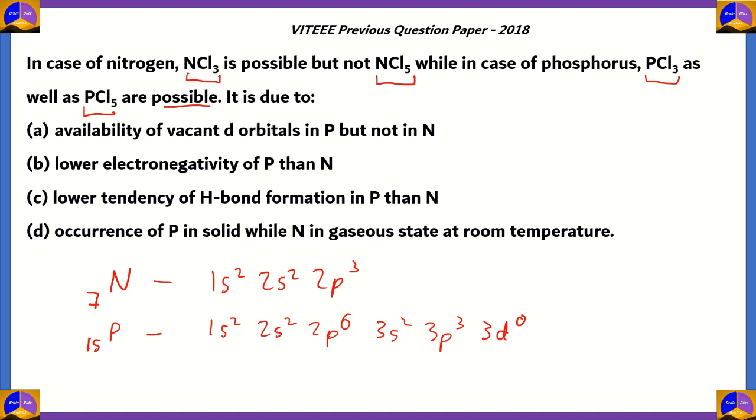If you want to form a pentachloride, you need to have availability of vacant d orbitals, because you have 5 chlorine atoms to bond with. Therefore, you must have the electrons required or you should have vacant orbitals where the chlorine atoms can form coordinate bonds.